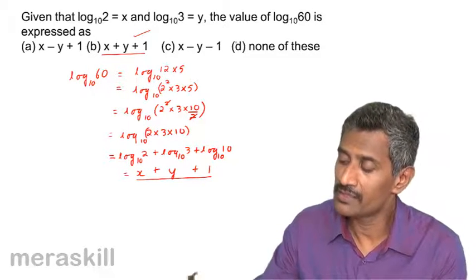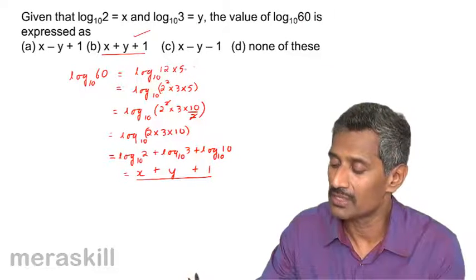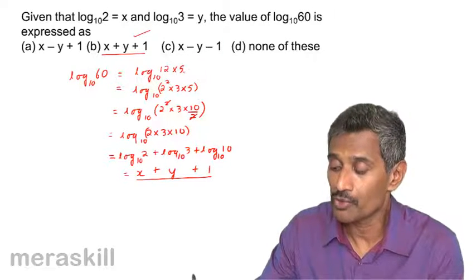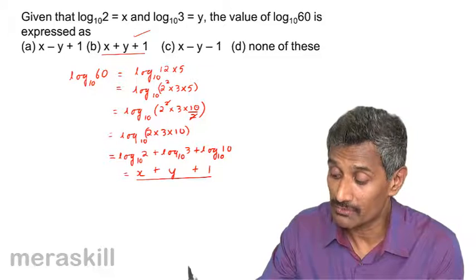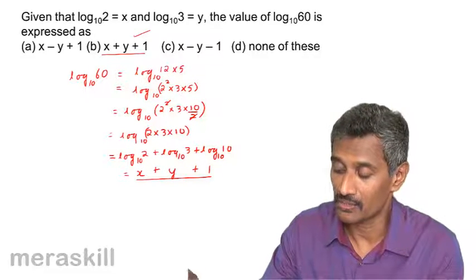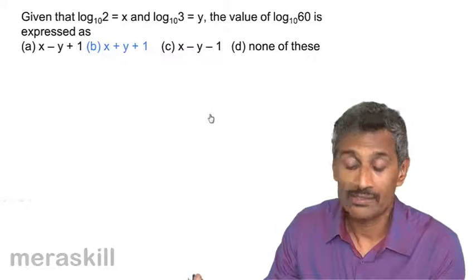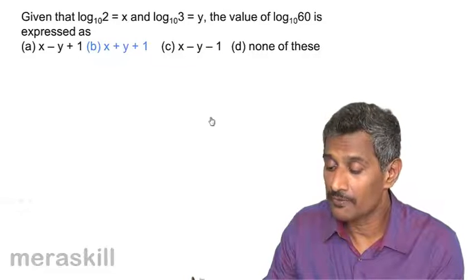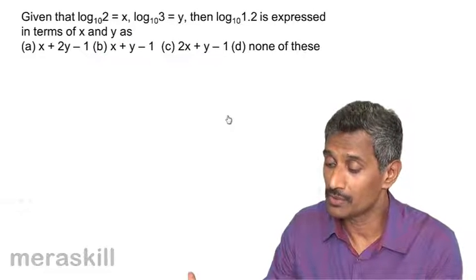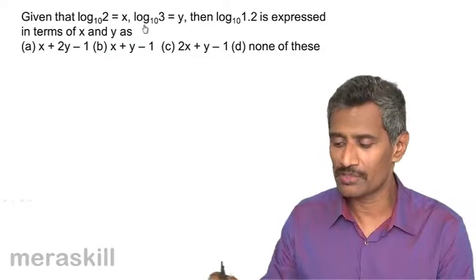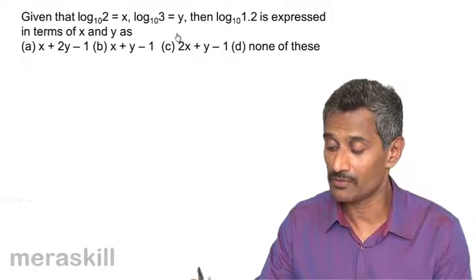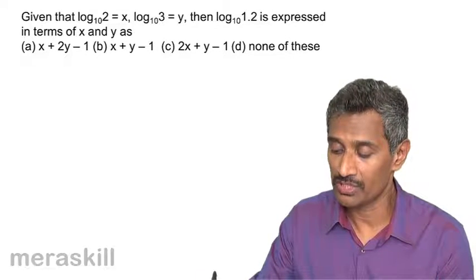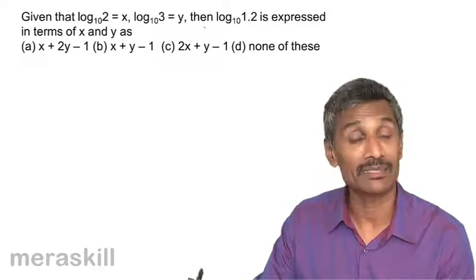What we've done here is prime-factorise 60 and write it as 6 into 10. I deliberately write 5 as 10 by 2 so that terms cancel. So the answer is x plus y plus 1. The next sum is quite similar. Given log 2 to base 10 is x and log 3 to base 10 is y, find log 1.2 to base 10.